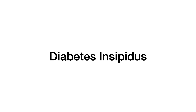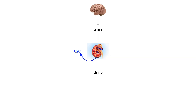In understanding diabetes insipidus, it's useful to refer back to the ADH physiology diagram. As a refresher: the brain creates ADH in the hypothalamus, it's stored and released from the posterior pituitary, it works its way to the kidney where it acts on V2 receptors causing water reabsorption. Under normal circumstances, this concentrates urine and changes urine osmolality as well as serum osmolality. There are actually two types of diabetes insipidus: central and nephrogenic.